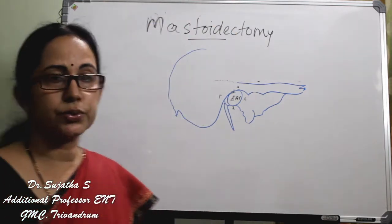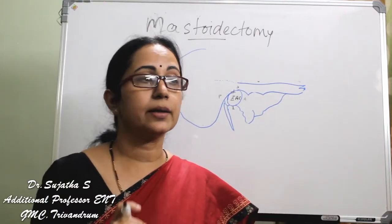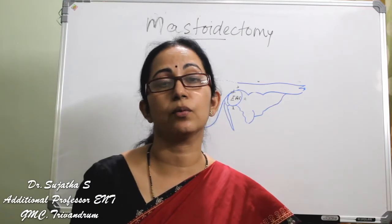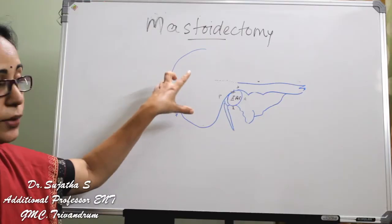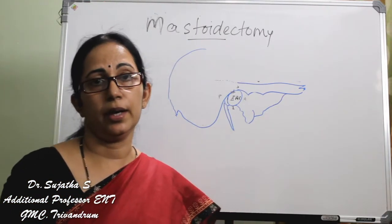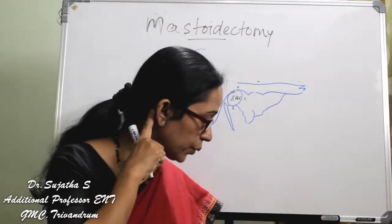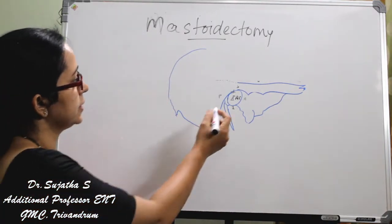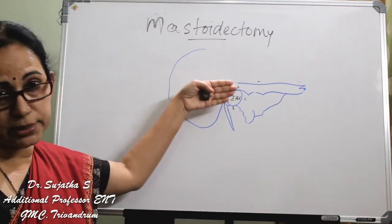Before going to that, I will explain certain terms and anatomical areas which will help you understand what canal wall up and canal wall down procedures are. This is a part of the temporal bone — actually the mastoid is a part of the temporal bone. This is the mastoid tip which comes in the post-aural area. This is the external auditory canal, which is a bony external auditory canal.